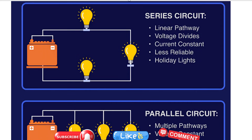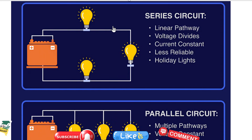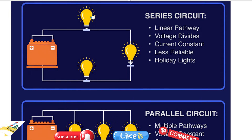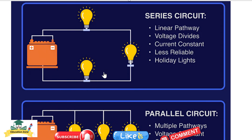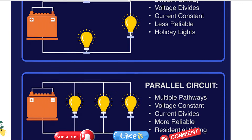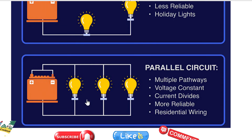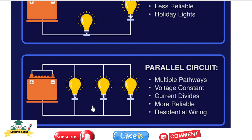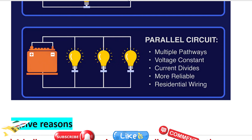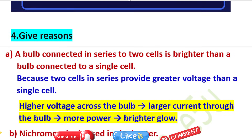In a series circuit, all bulbs are connected in one line — like a string of lights — and one switch controls all. In a parallel connection, each appliance has its own switch. Our home wiring uses a parallel circuit.